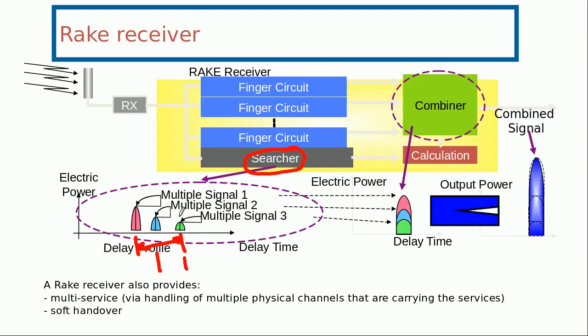And between the second and third copy of the same signal how much is the time difference. So after that, the first signal would basically be received by the finger circuit number 1, second signal would be received by the finger circuit number 2, and the third signal would be received by the finger circuit number 3.